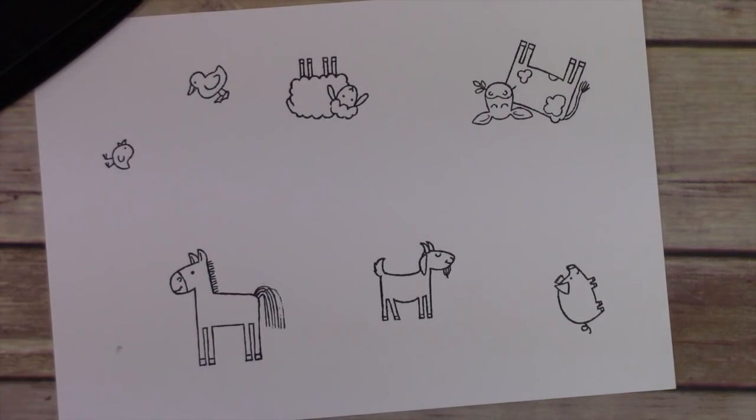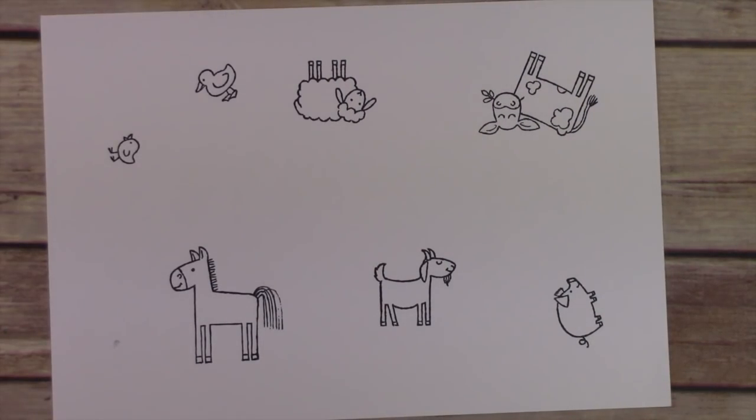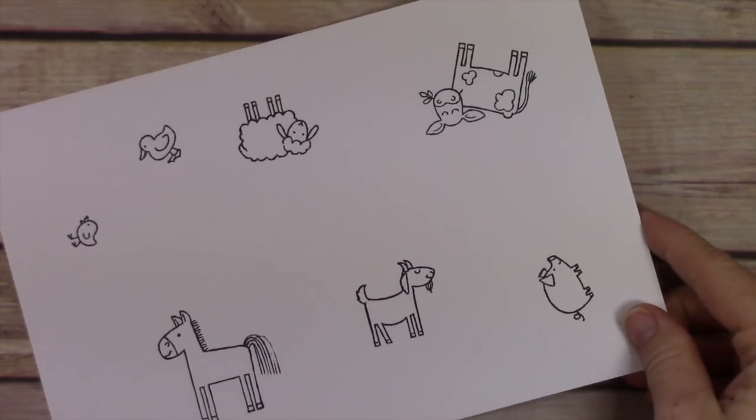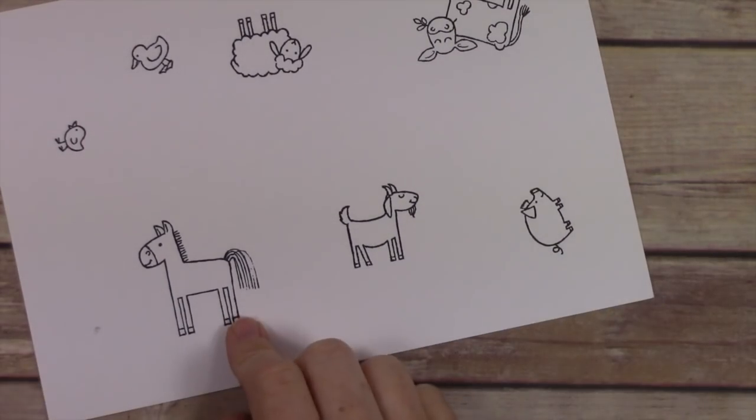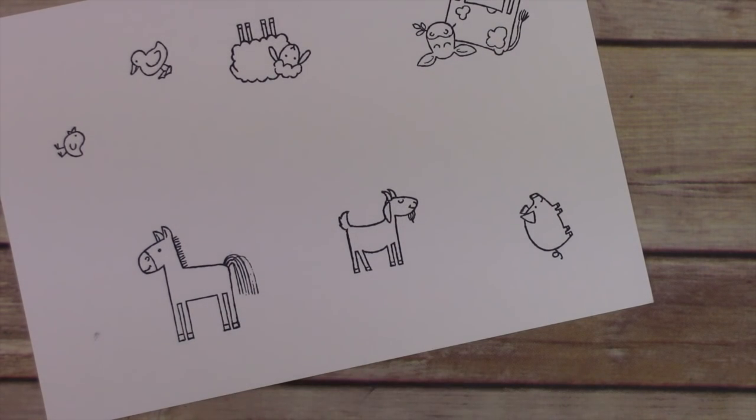Once I get them all stamped, I'm going to punch them out. Well, first I'm going to color them, but after I color them I'm going to punch them out using circles.